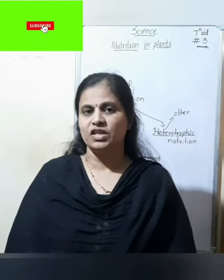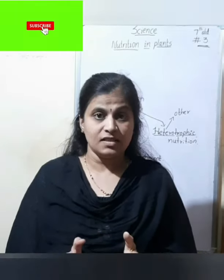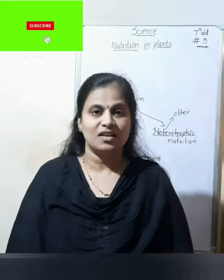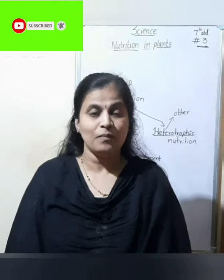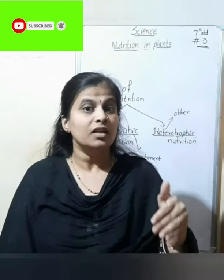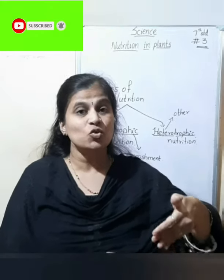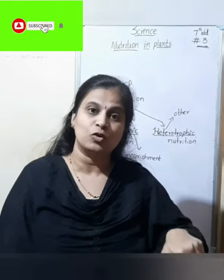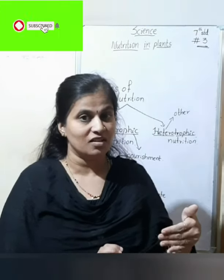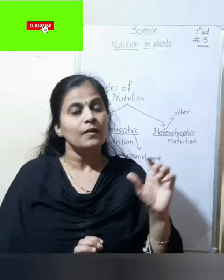Let's move on to symbiotic mode of nutrition. In symbiosis, some organisms live together and share shelter and nutrients — sharing and caring takes place. For example, some fungi live in the roots of plants and provide nutrients to the plant. In return, the plant also provides nutrients and shelter to the fungi. This mutual exchange is called symbiotic mode of nutrition.